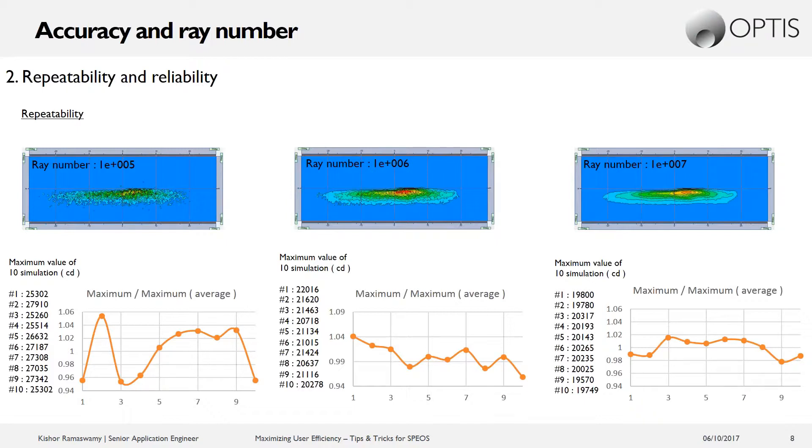And you can see as this number of rays is increased from 10,000 to 100,000 to 1 million to 10 million, that result starts to converge on the same value on every iteration. So we're getting closer and closer to having repeatable simulation results.